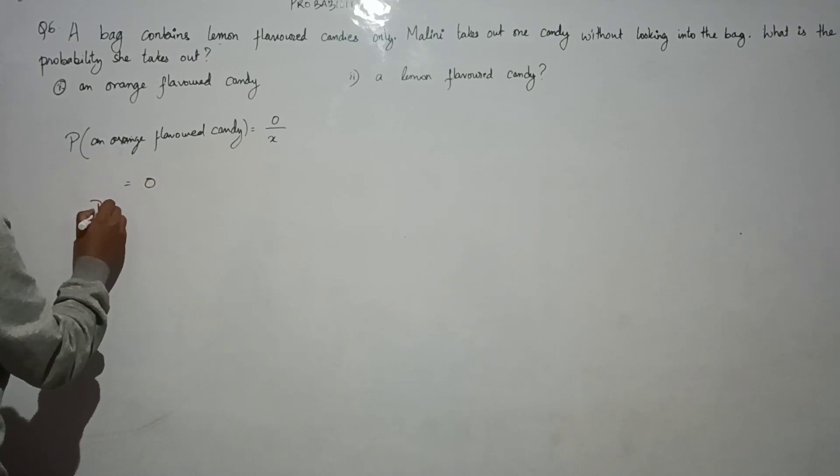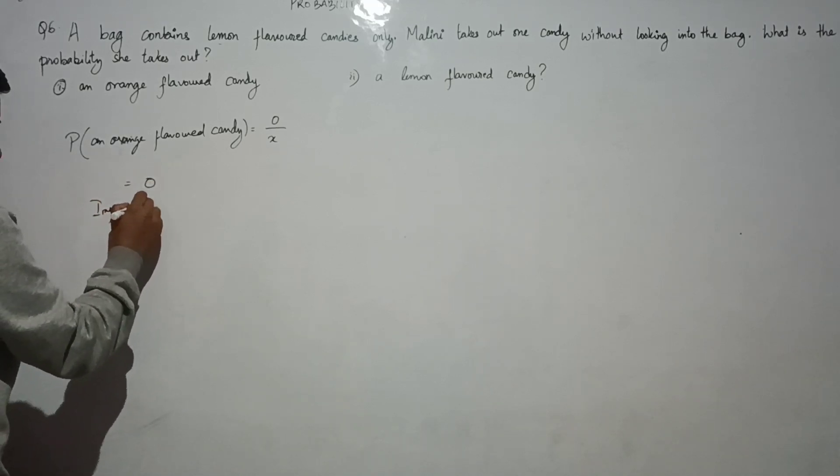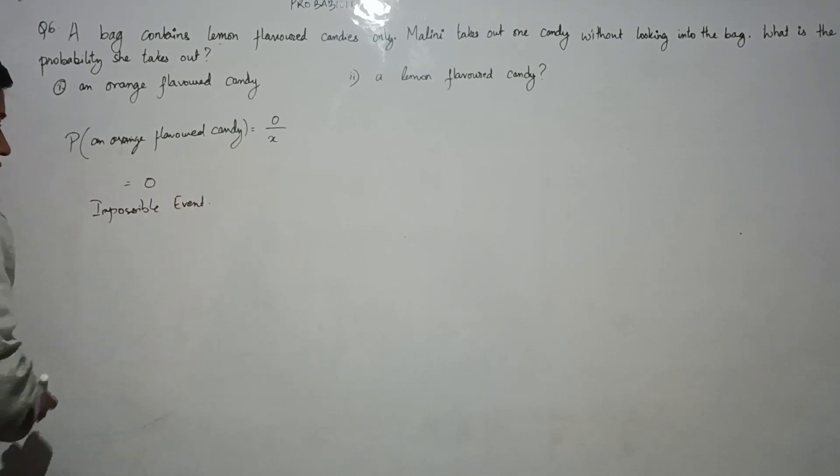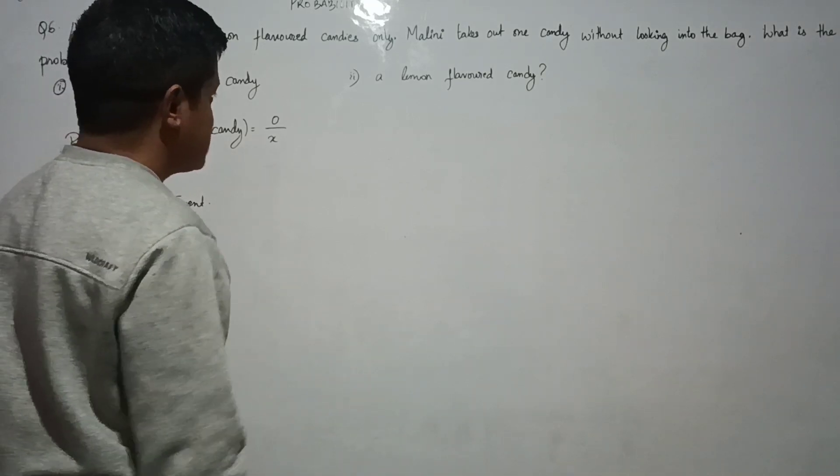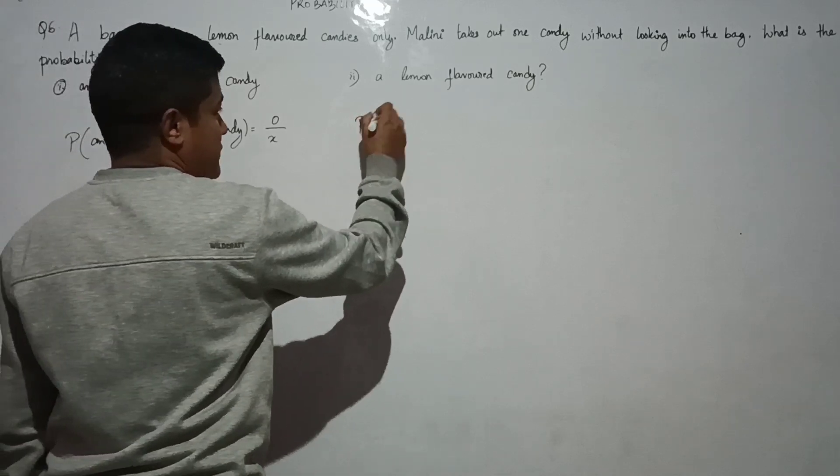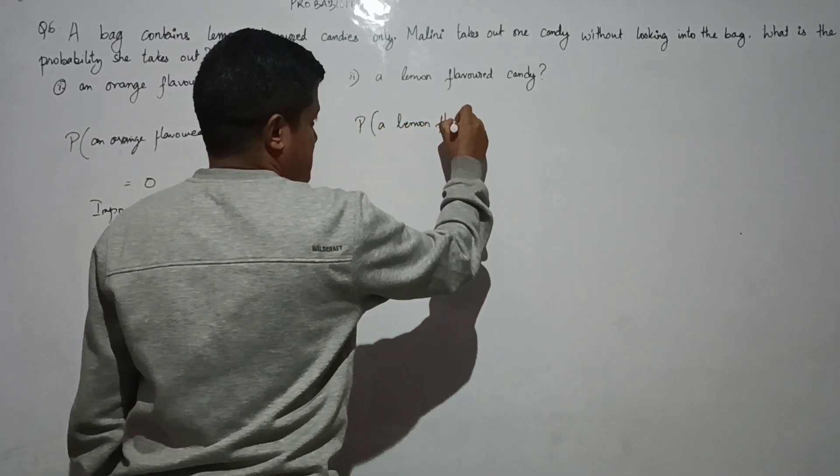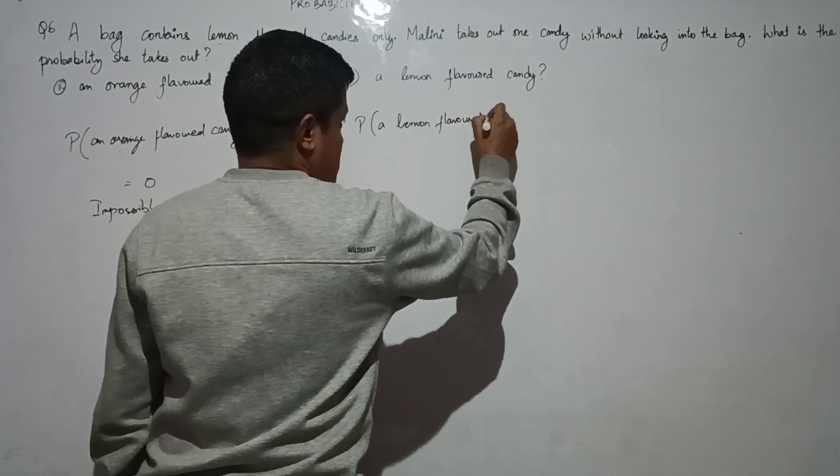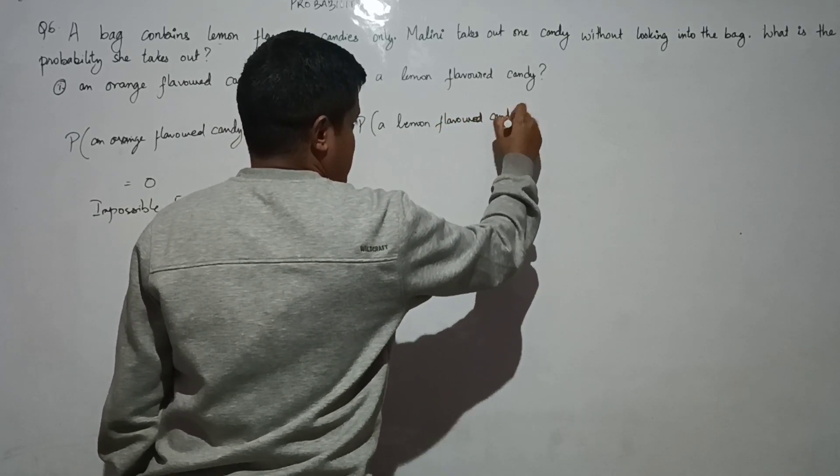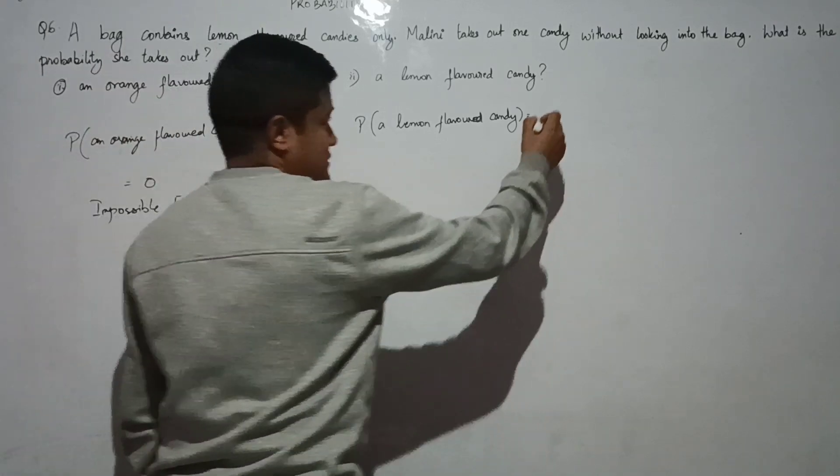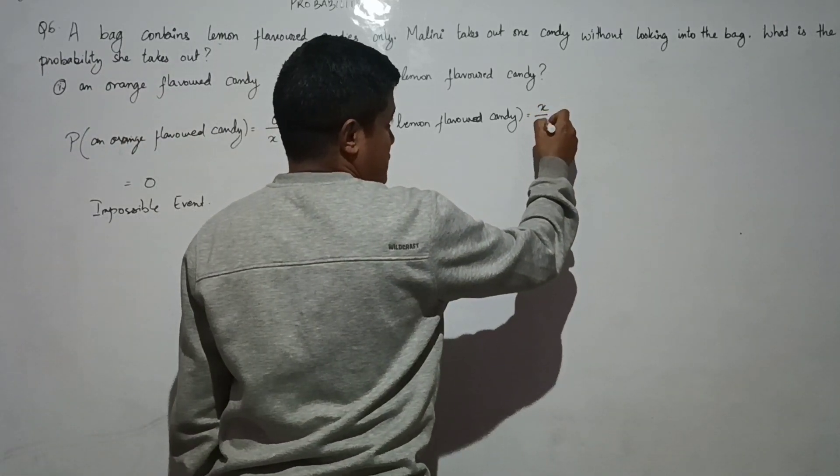So it is an impossible event because there aren't any orange flavored candies. Second case: all lemon flavored candy. If there are X lemon candies, the total is X.